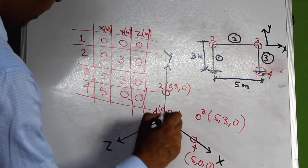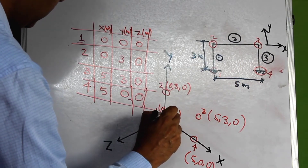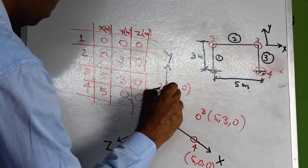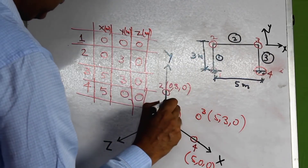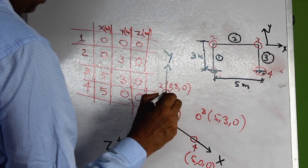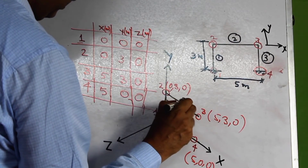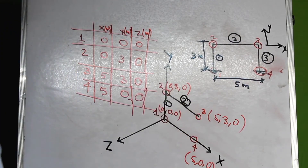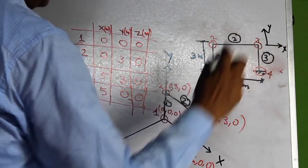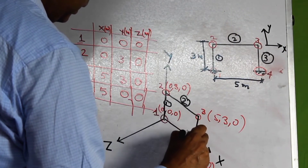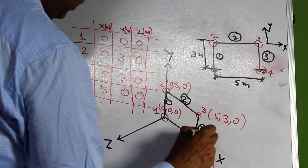Member 1 is created between node 1 and node 2. Member 2 is created between node 2 and node 3. And member 3 is created between node 3 and node 4. This completes the geometry of the goal post frame.